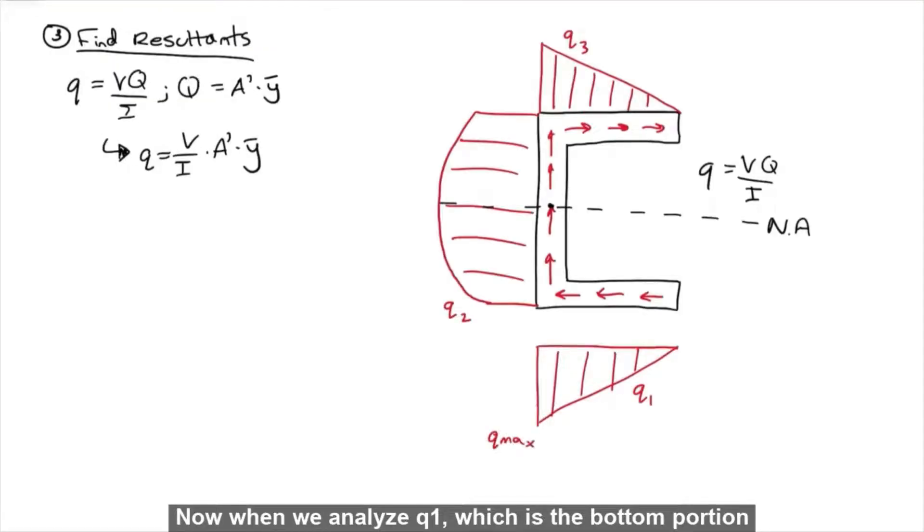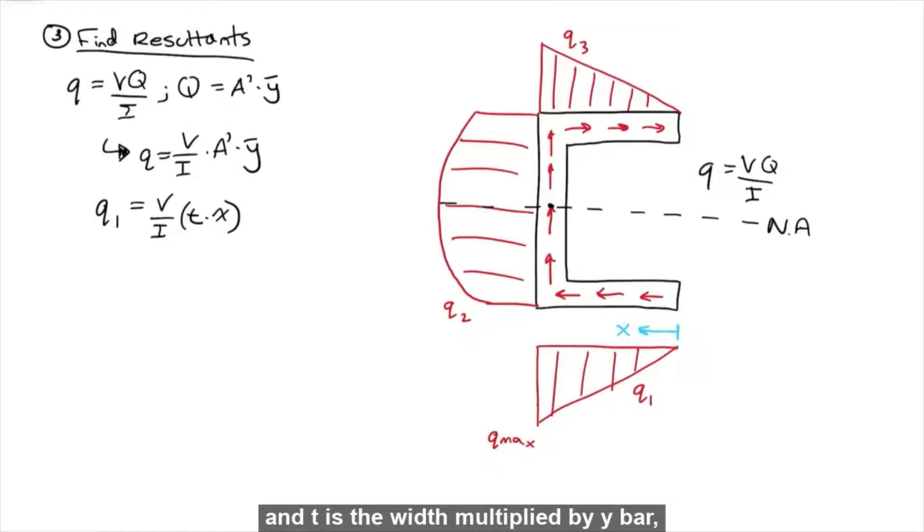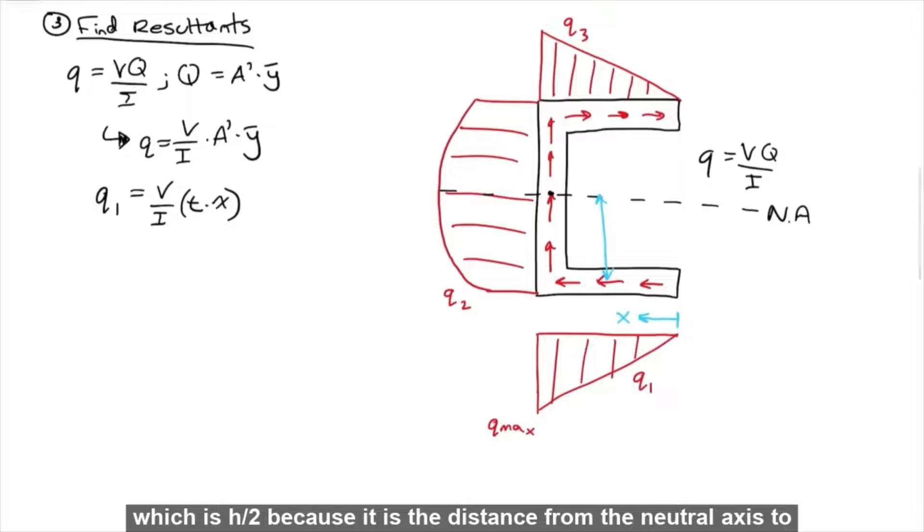Now when we analyze Q1, which is the bottom portion, A prime is equal to X times T, where X is some length across the section and T is the width, multiplied by Y bar, which is H over 2, because it is the distance from the neutral axis to the center of this portion.